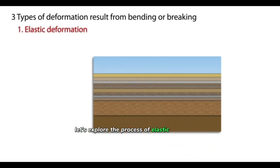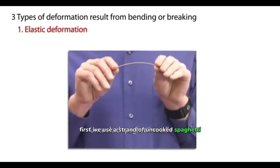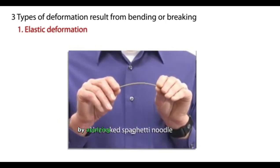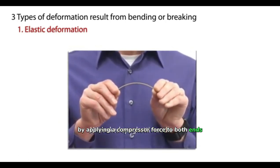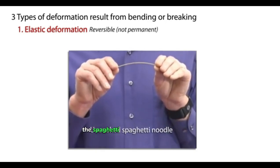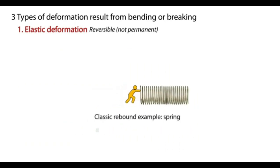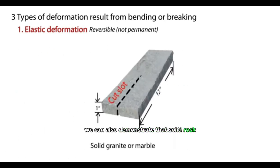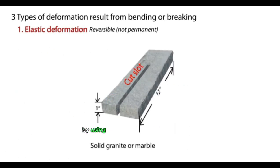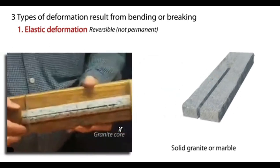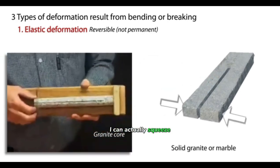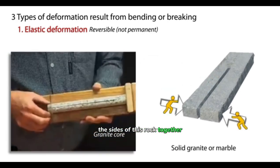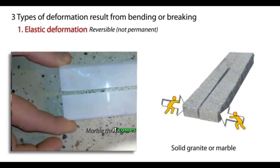Let's explore the process of elastic deformation first. We'll use a strand of uncooked spaghetti. You can deform the spaghetti by applying a compressive force to both ends. When the force is removed, the spaghetti returns to its original shape, a process called elastic rebound. We can also demonstrate that solid rock can deform elastically by using a split piece of granite or marble. If I squeeze this, I can actually squeeze the sides of this rock together, and when I let go, it comes back again.